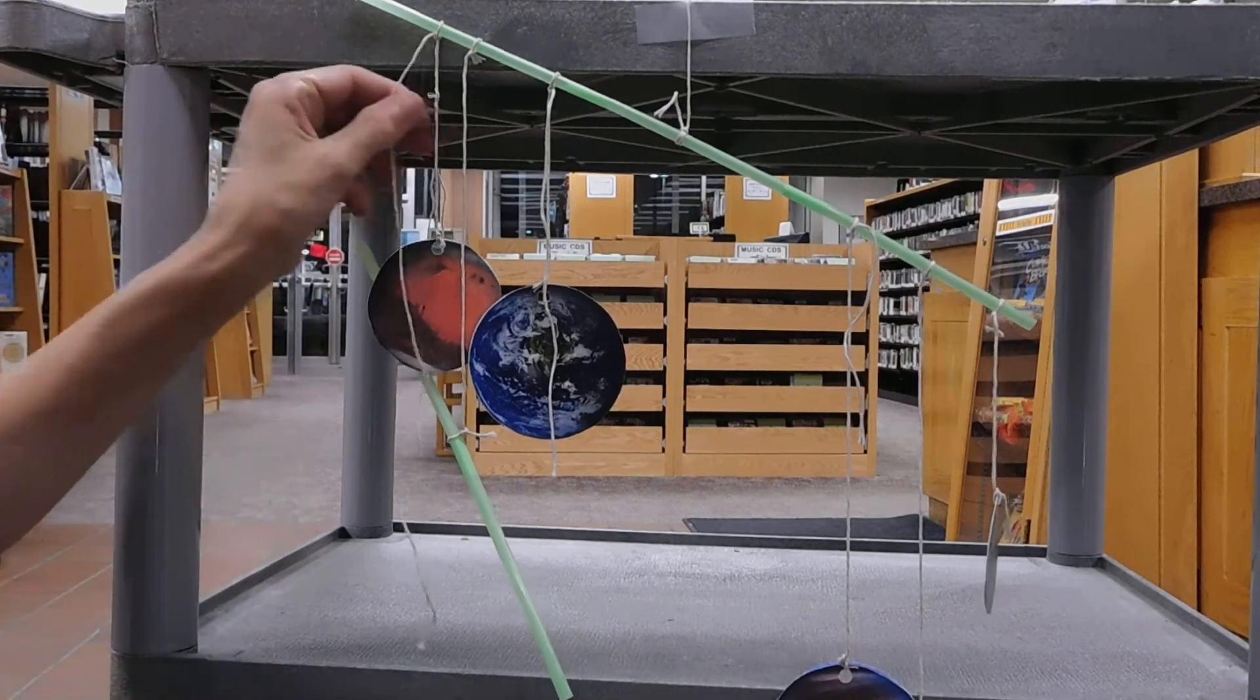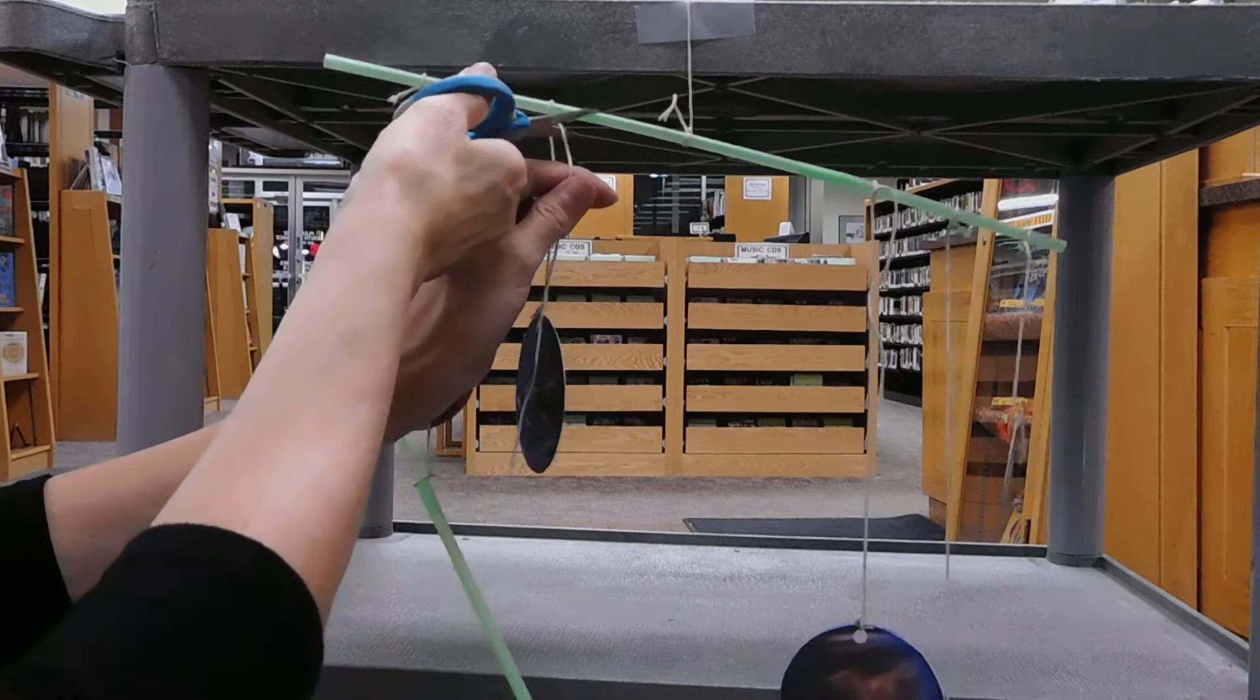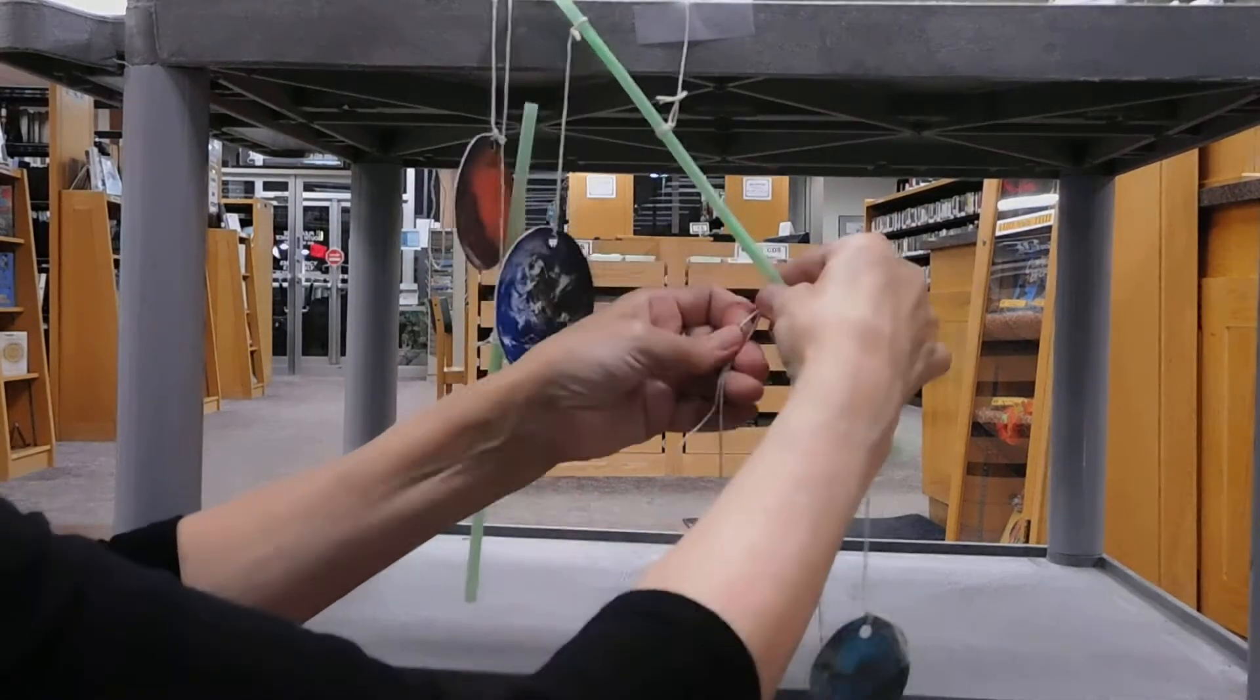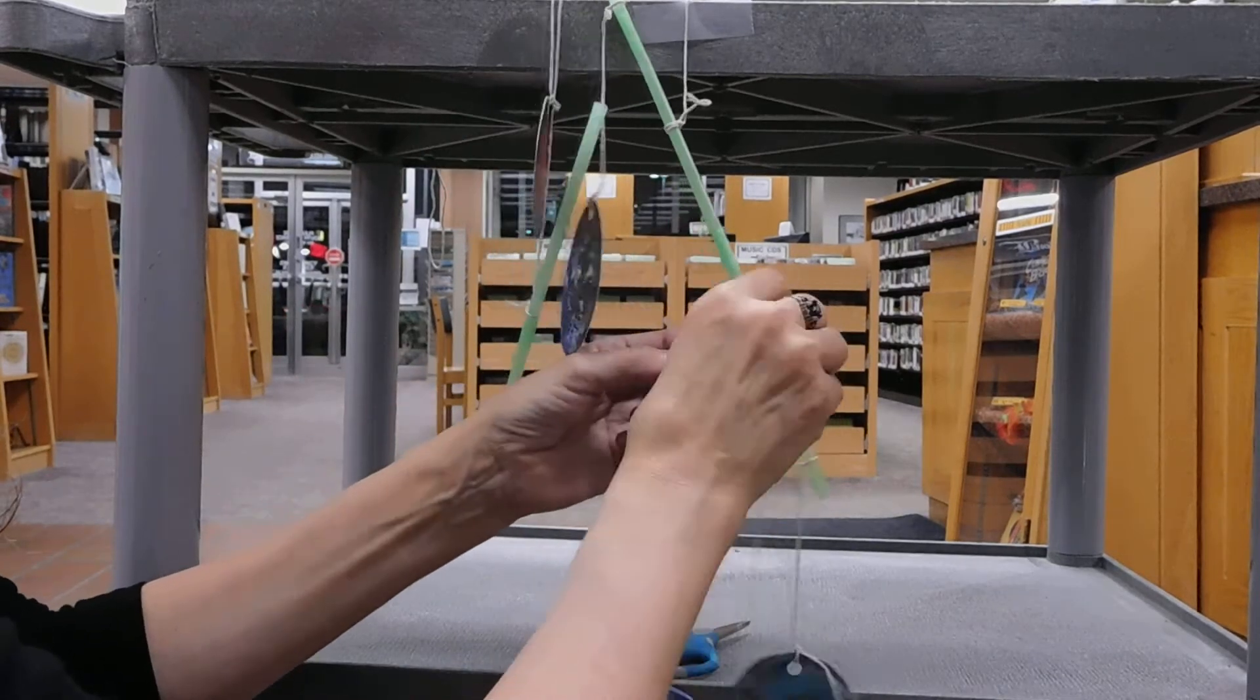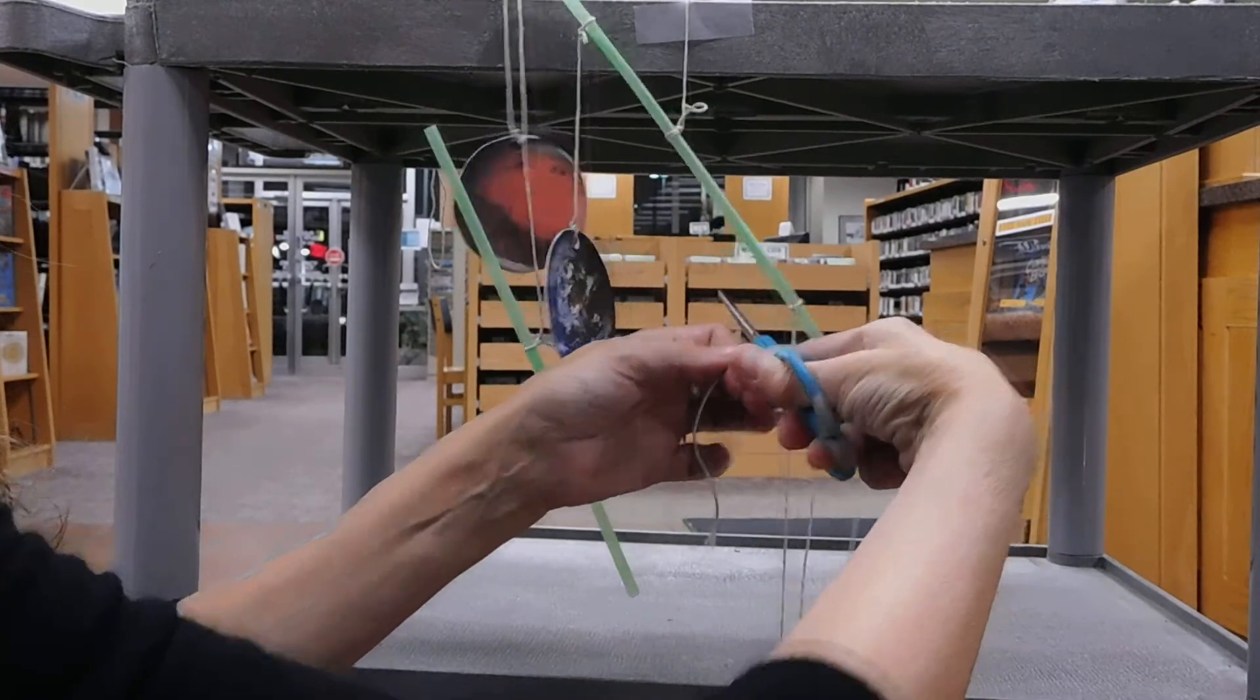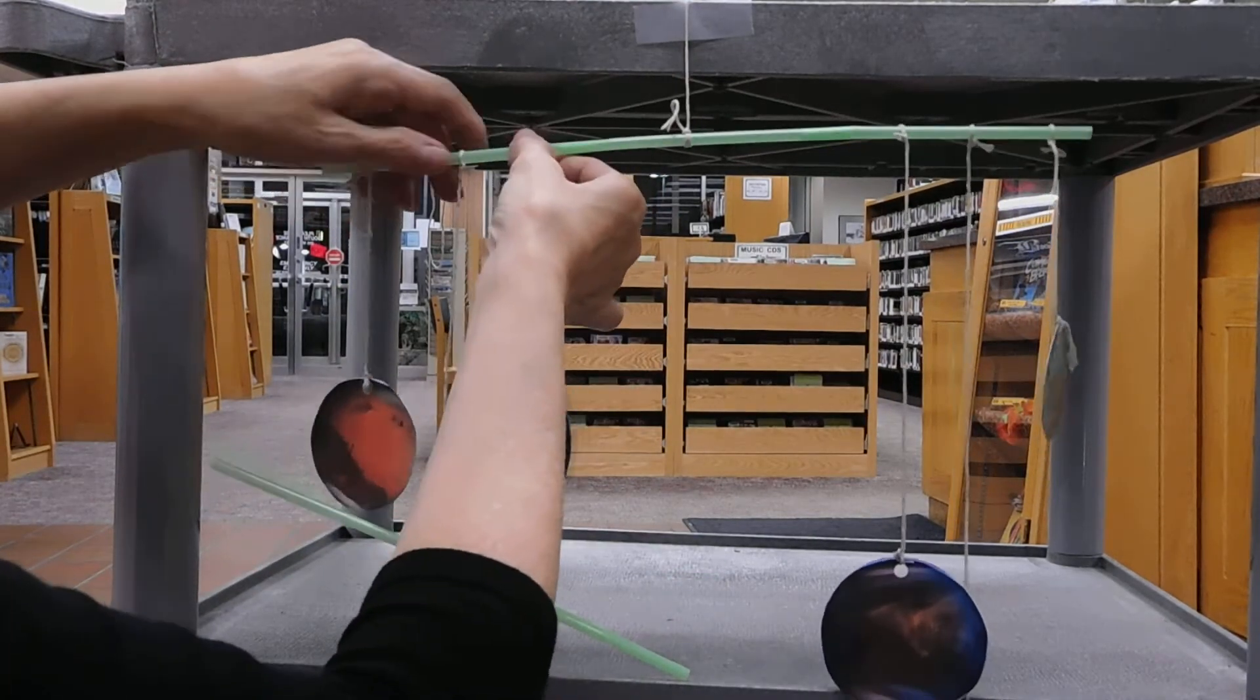So before I go any further with this, I am going to cut off the extra string so we don't have extra weight from the string. And then I am going to move the planets on this portion so that everything is in balance. And then I'm going to check and make sure that it is all able to move freely.